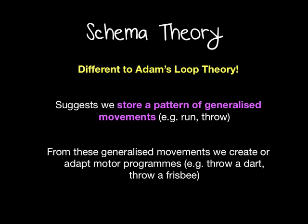The reason this theory was devised was the fact that the brain can't possibly store so much information. Schema theory suggests this is a way that the brain remembers so many skills, as it just links it to a generalised pattern of movements.